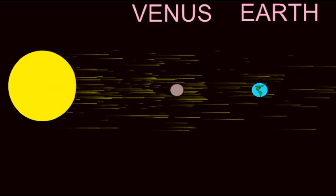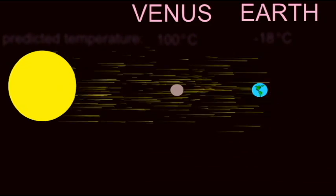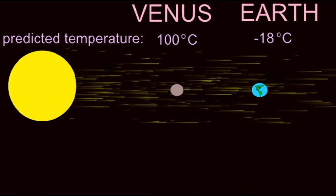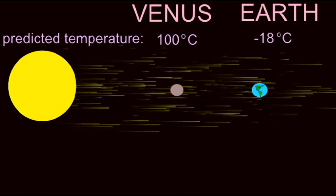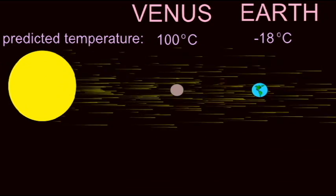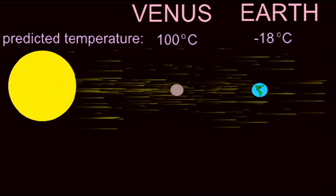If the average temperatures of Earth and Venus were determined only by their distance from the sun, Venus would have an average temperature of 100 degrees Celsius and planet Earth would have an average temperature of negative 18 degrees Celsius.